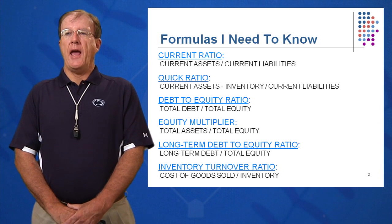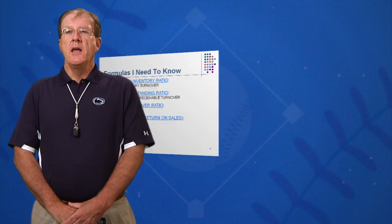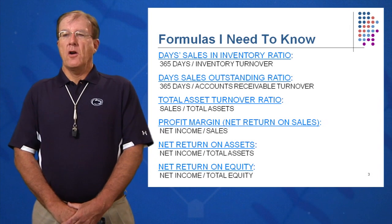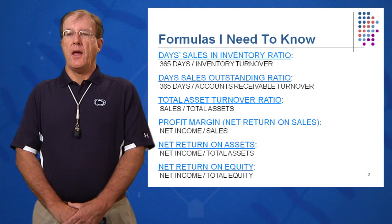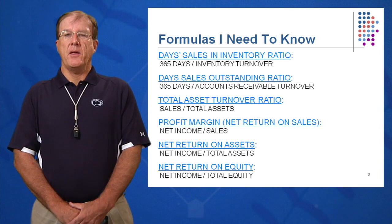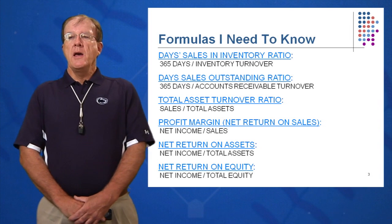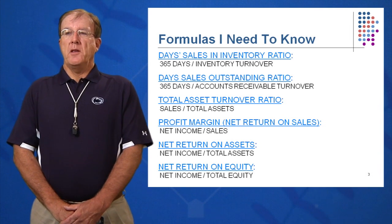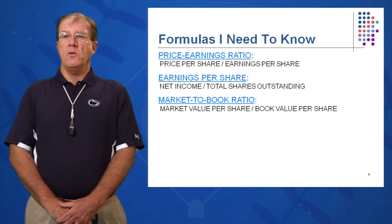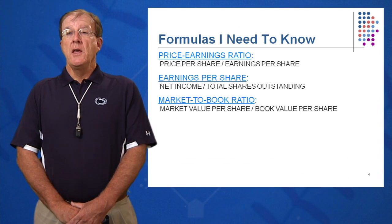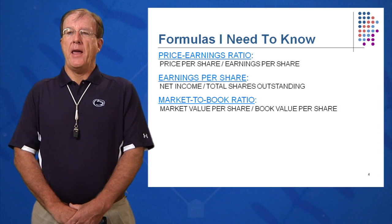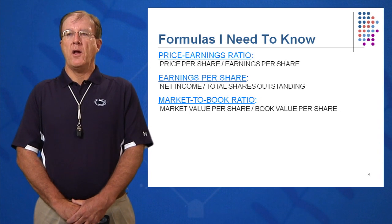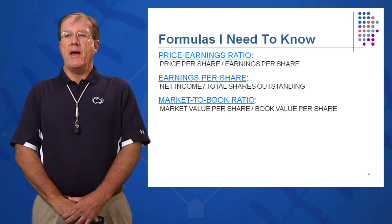In the asset management category, we want to look at inventory turnover, day sales in inventory, day sales outstanding, and day sales in receivables. Total asset turnover to a lesser degree. In the profitability ratio category, we want to look at profit margin — we'll call that net return on sales, which is a bit easier to remember. Net return on sales, net return on assets, and net return on equity will be discussed in the profitability area. In the market value area, we'll cover P/E ratio, earnings per share, and market-to-book.